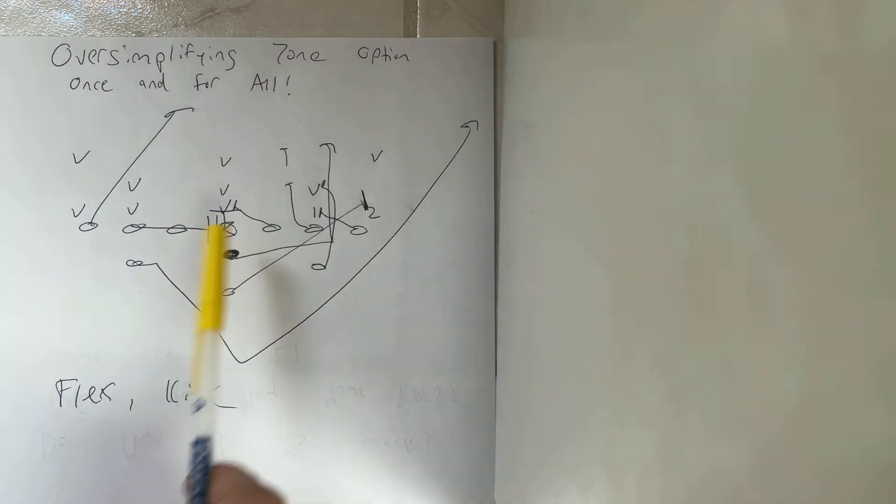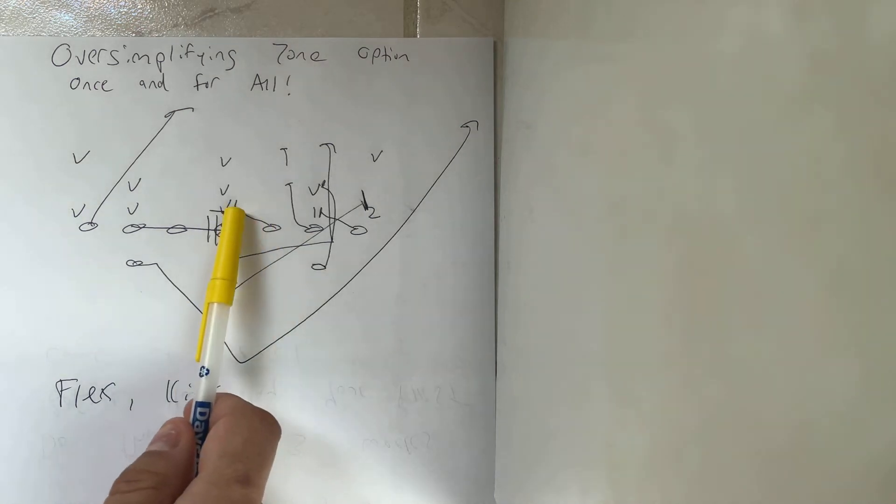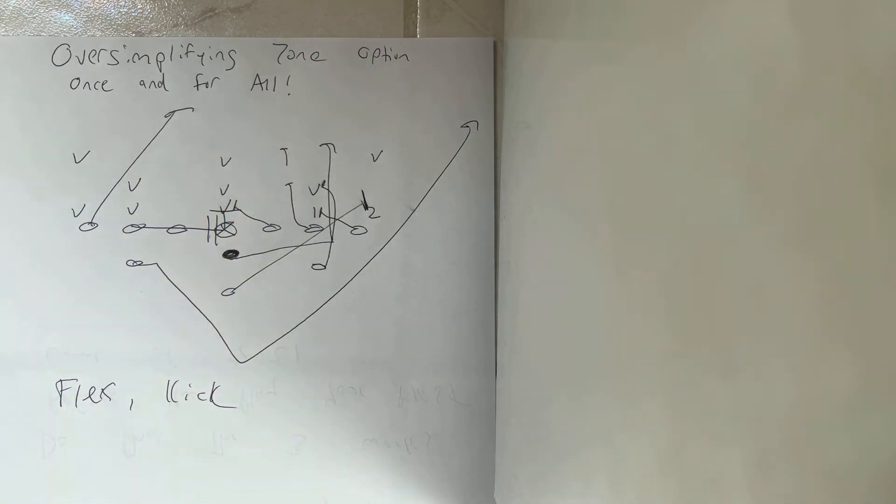The guard and the center have the play side A gap. So pretty much if there's a 2 eye, a 1, or a 0, they're going to ace it. And they're going to double whoever's there. So this will be an ace call. Center's going to snap the ball. He's going to step with his left foot and his right hand. He's going to put his right hand to the backside part of the zero technique stomach while the guard gets his near knee through the crotch, near hand to the stomach, and takes 4-inch northbound steps.